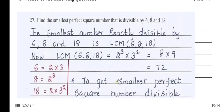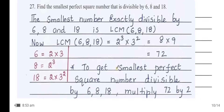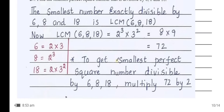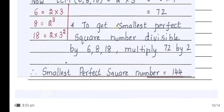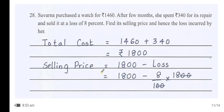Find the smallest perfect square number divisible by 6, 8, and 18. LCM of 6, 8, and 18 = 2³ × 3² = 72. To make it a perfect square, multiply 72 by 2. Therefore the smallest perfect square number = 144.